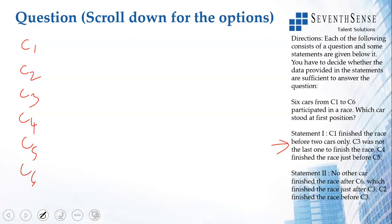I know C1 finished the race before 2 cars only. So, C1 is 4th. I have 1st, 2nd, 3rd, 4th, 5th, 6th. This is C1 before 2 cars only.